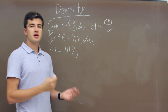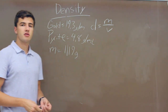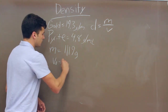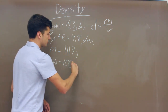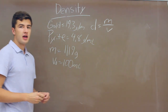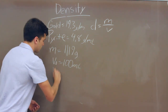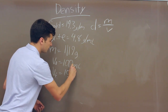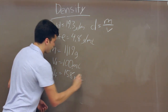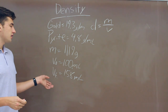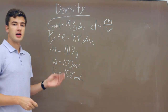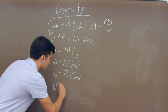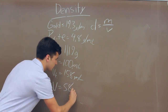We'll determine the volume by placing our unknown object into a beaker of water. The initial volume of this beaker is 100 milliliters. After we add our unknown object, the final volume is 158 milliliters. So the difference between these two has to be the volume of our object, which is 58 milliliters.